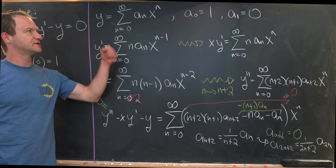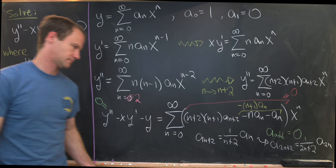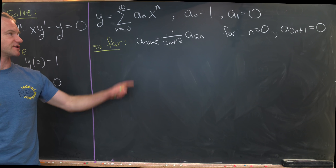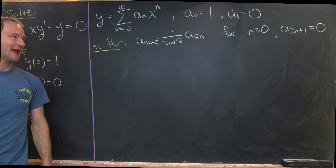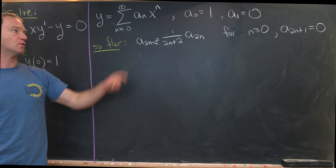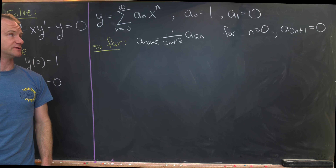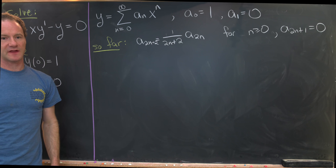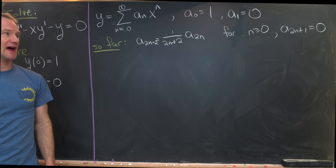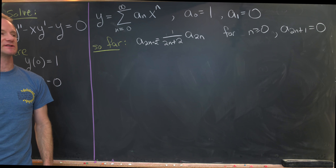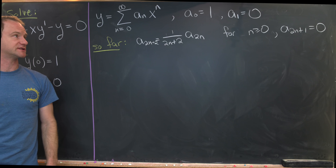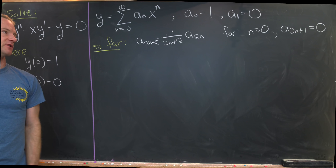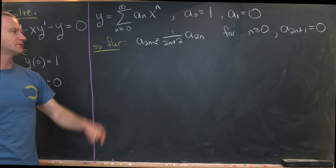To summarize: the even terms of our power series are given by the recursion a_{2n+2} equals 1 over (2n+2) times a_{2n}, for n greater than or equal to zero. Furthermore, the odd terms are all zero: a_{2n+1} equals zero for all n greater than or equal to zero. That all comes from our initial conditions, particularly a₁ equals zero.